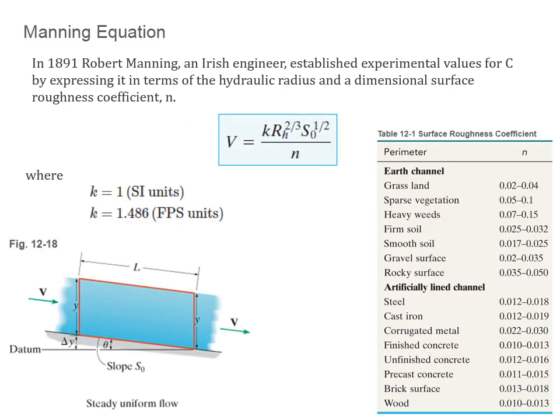The Manning equation is given by the following equation. K here is constant based on what units you choose. If you choose SI units or you choose English units, you choose 1 or 1.486.